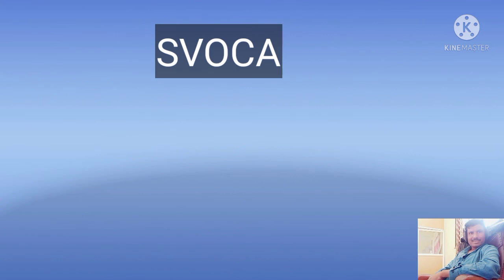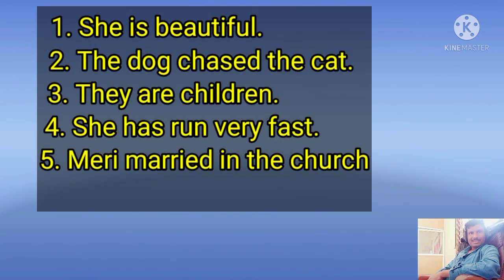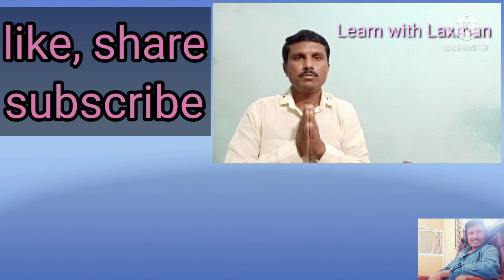These are the four basic clause types we have studied so far. I am going to give you an exercise to identify the clause elements in the given examples and write their answers in the comment box. The examples are: 1) She is beautiful. 2) The dog chased the cat. 3) They are children. 4) She has run very fast. 5) Mary married in the church. Try to identify and write the patterns in the comment box. In the next video we will talk about the remaining basic clause types. If you liked this video, please like, share, and subscribe to the channel. Thank you very much for watching.